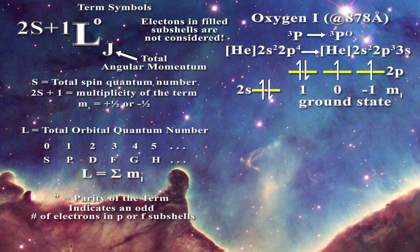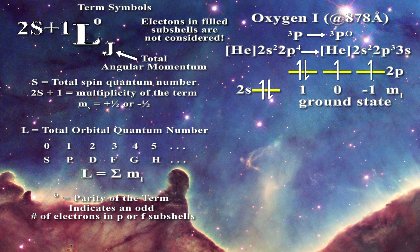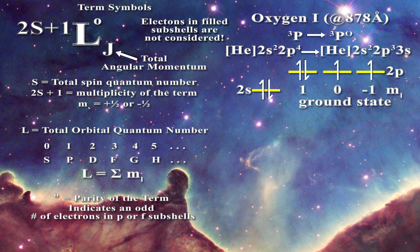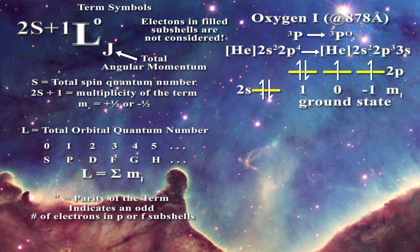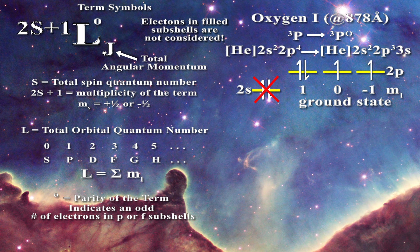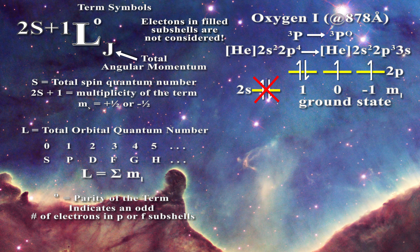Now let us arrange our electrons for the ground state. Two electrons are paired in the s shell and four electrons are placed in the p shell: two electrons paired in the m sub l equal 1 shell, one in the m sub l equal 0 shell and one in the m sub l equal minus 1 shell. The filled s shell does not contribute to the term symbol. There are two unpaired electrons in the p shell, so the parity is even and no superscript is found on the upper right of the term symbol.